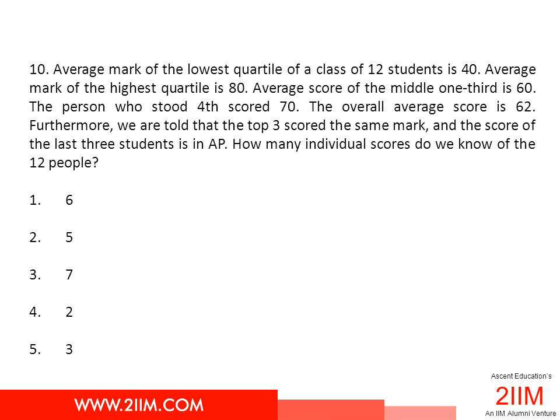Let's look at one or two definitions. A quartile is one-fourth. The lowest quartile would mean the last one-fourth of students. There are 12 students, so the students who got the last three scores would form the lowest quartile. The top quartile would be scores 1, 2, and 3.